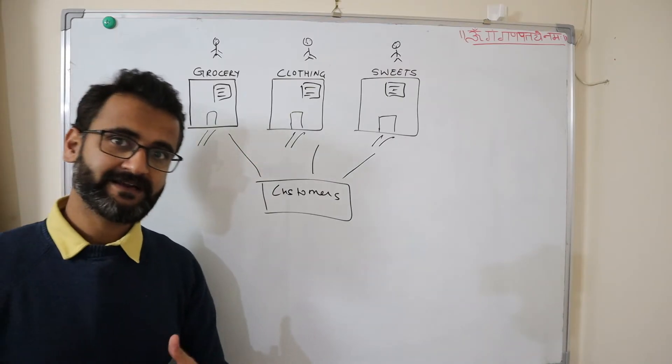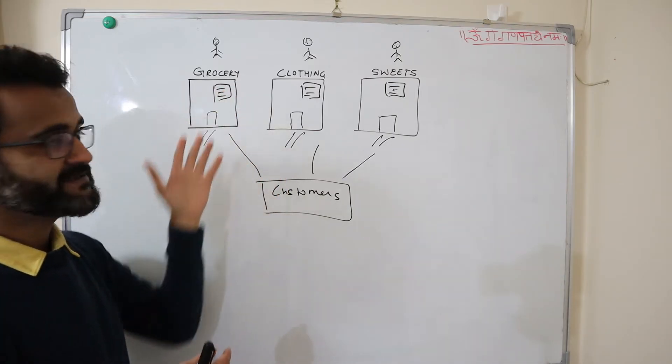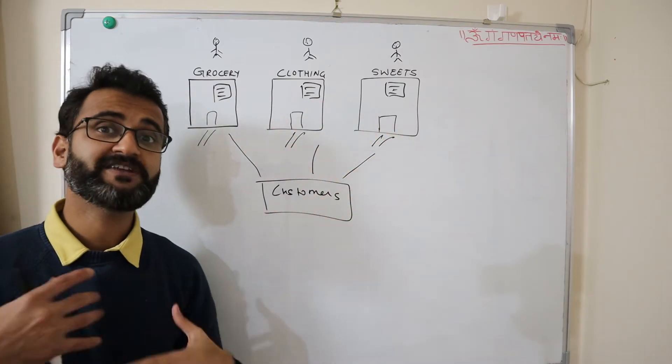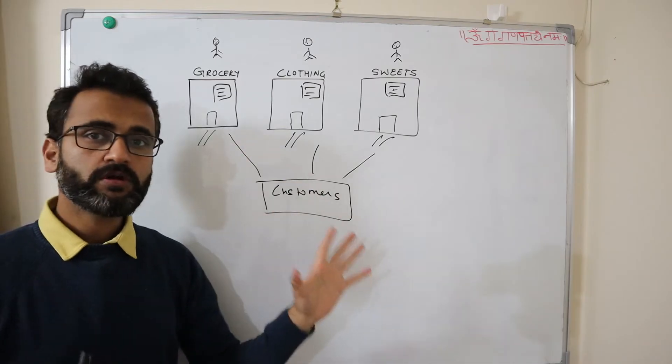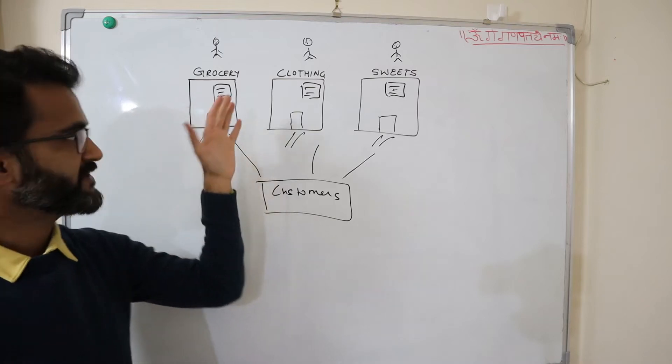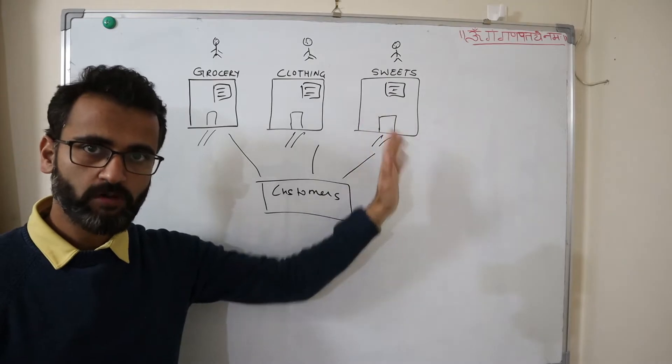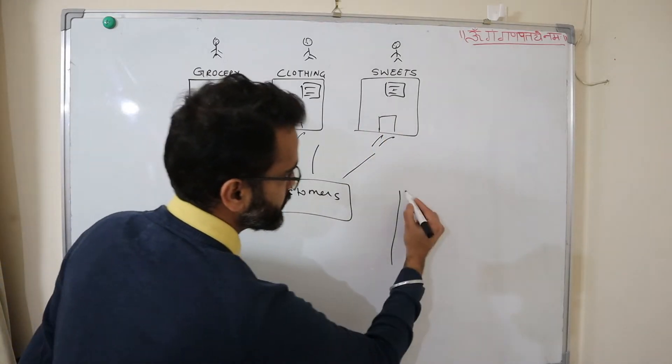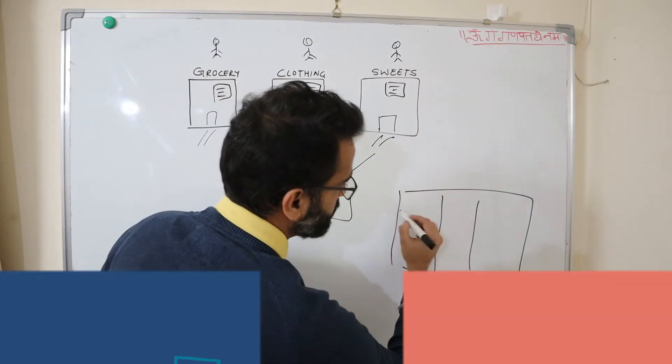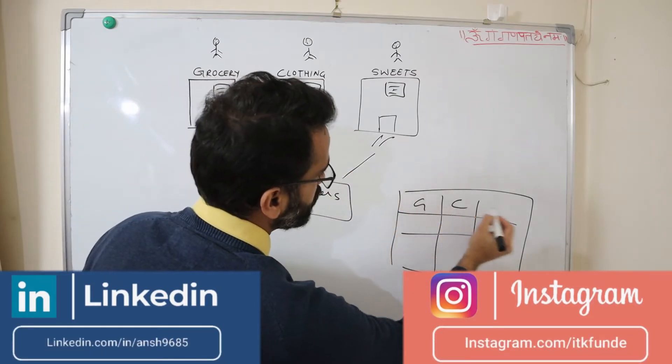They wanted to give special offers to those customers who are regularly buying grocery, clothes and sweets from all three brothers. But it was very tedious because these three registers were maintained separately in individual shops. Whenever they used to do this exercise at the end of the month, they used to combine this data, see the customer name and then match the data across various registers. So it was very slow and tedious. They came out with an idea that instead of having individual registers for individual specific shops, they will have a combined register.